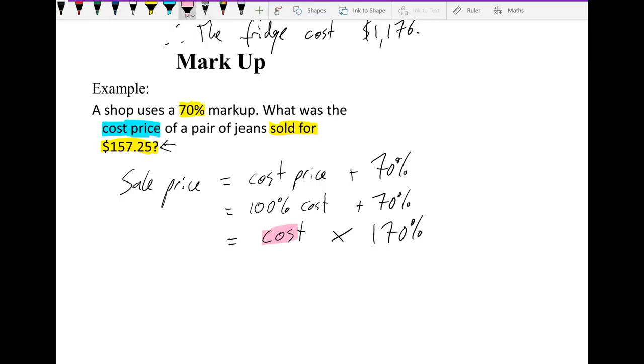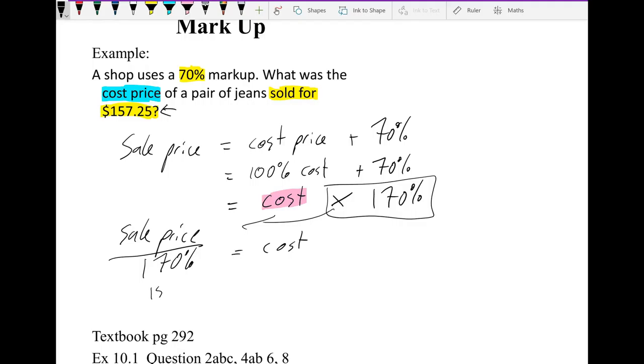So if I want to find this, I need to rearrange my equation to get that by itself. Let's move this over to the other side of the equation. What's the opposite of timesing by 170%? Well, it's dividing. So I'm going to have sale price divided by 170% will give me my cost. So our sale was $157.25 divided by 1.7 will give me my cost price. That's $157.25 divided by 1.7, which is $92.50. Therefore the jeans cost $92.50 before the markup. That was the cost price. And that's markup.